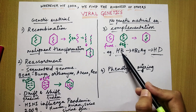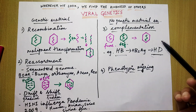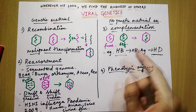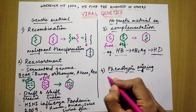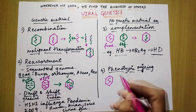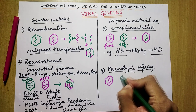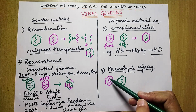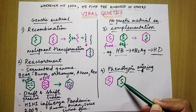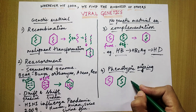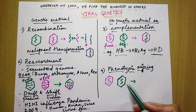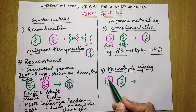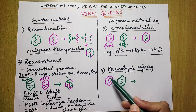Hepatitis D receives the HBs antigen from Hepatitis B and infects the liver cells. Now, phenotypic mixing is very similar to complementation but with a few minor differences. Here also there is one virus with its genetic material and another virus with its own genetic material. Here also there is exchange of only the outside protein capsid — there is no exchange of genetic material. But the main difference is that here both viruses are functional and the exchange can occur in any direction.